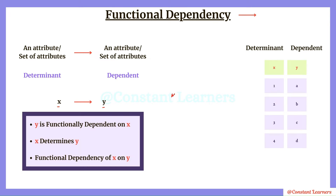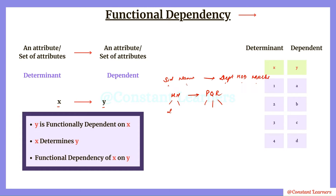For example, if we have attributes M and N going towards P, Q, R, we say attributes MN determine attributes PQR. If we have Student ID and Name on the left and Department, HOD, and Marks on the right, we say Department, HOD, and Marks are functionally dependent on Student ID and Name. Or: attributes Student ID and Name determine the attributes Department, HOD, and Marks. This is how we denote and read the statement of functional dependency.